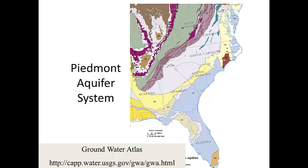Clemson is in western South Carolina and it's underlain by the Piedmont Aquifer System. This map shows the principal aquifers of the US. You can get more information at the Groundwater Atlas, which is a great resource for the hydrogeology of the US. If you just search for Groundwater Atlas, you'll get there.